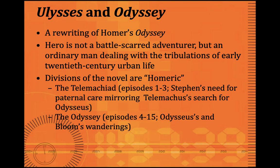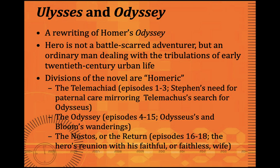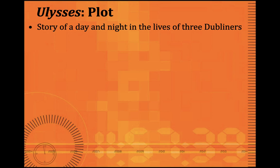The Odyssey is the second and biggest part, episodes four to fifteen, showing Odysseus's and Bloom's wanderings — Odysseus in mythology, Bloom in Joyce's novel. The last part, also three episodes, is the Nostos or the return: the hero's reunion with his faithful — or in this case, faithless — wife. That happens in the house of Leopold Bloom. These are the three parts of Joyce's Ulysses which parallel Homer's Odyssey.